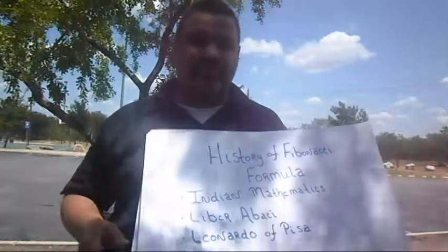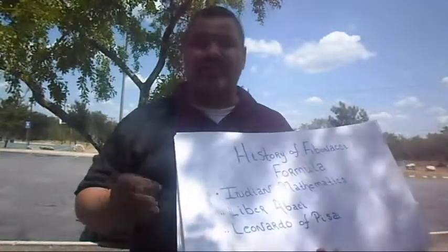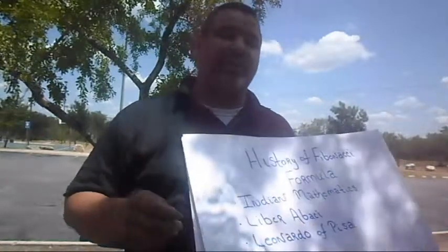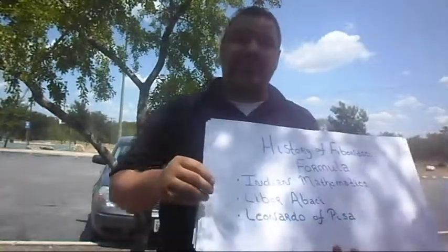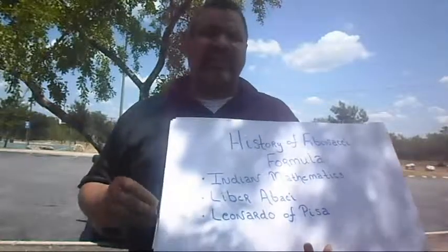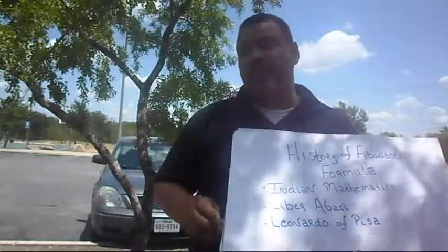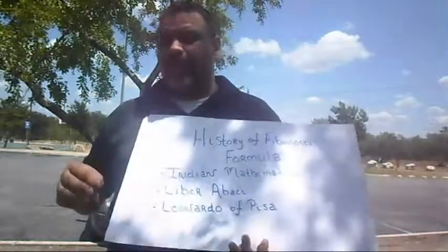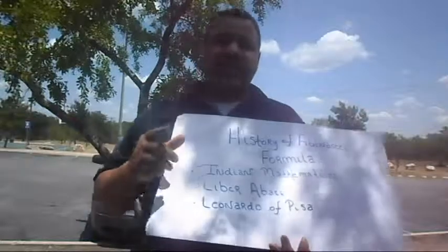The sequence for the Fibonacci formula first surfaced in India, more specifically in the meters of Sanskrit poetry as early as 200 AD. It wasn't until 1202 when Fibonacci wrote Liber Abaci that the West was introduced to this sequence. Here's a fun fact: Fibonacci's real name is actually Leonardo of Pisa. His nickname, however, was Fibonacci.